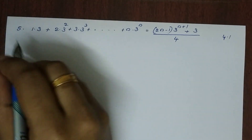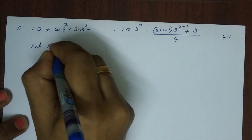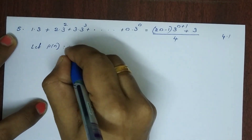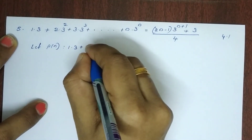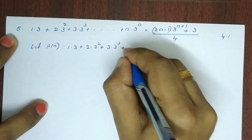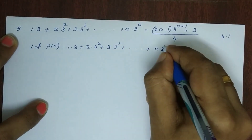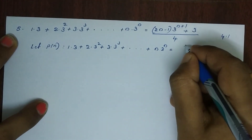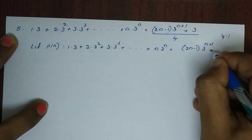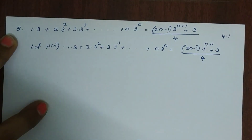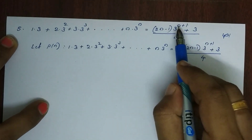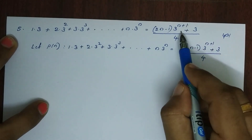Now we have to prove this. Let P of n be: 1 into 3, plus 2 into 3 squared, plus 3 into 3 cubed, plus etc., plus n into 3 raise to n, is equal to 2n minus 1 into 3 raise to n plus 1, plus 3, the whole divided by 4.